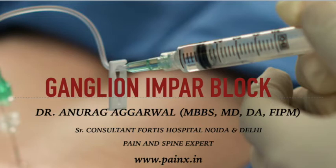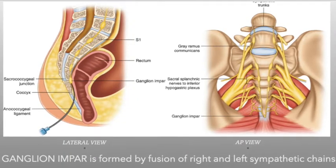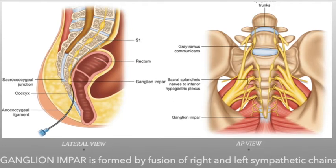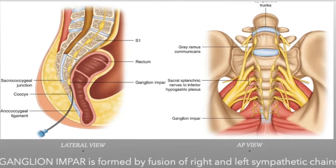I am Dr. Anurag Agrawal and today we will talk about Ganglion Impar block. Ganglion Impar is a solitary ganglion formed by the fusion of right and left sympathetic chains.